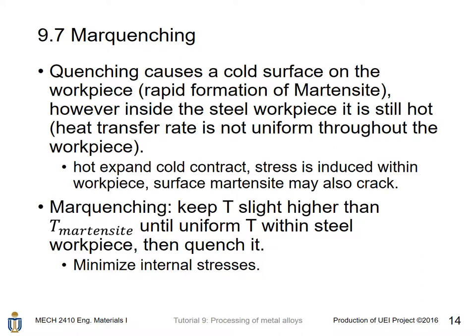Marquenching: quenching causes a cold surface but the interior remains hot, resulting in non-uniform heat transfer. The hot part expands and the cold part contracts, inducing stresses, and the surface martensite may crack. Marquenching keeps the temperature slightly above the martensite formation temperature until temperature is uniform throughout the workpiece, then quenches, minimizing internal stresses.